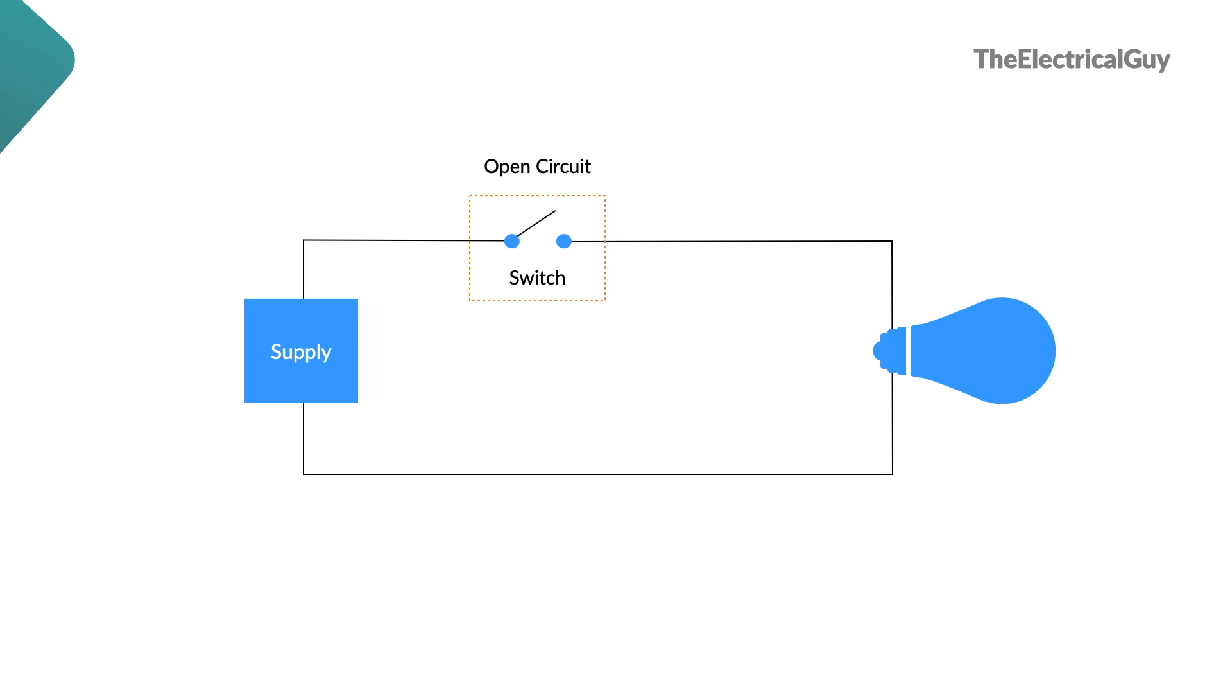Coming back to open circuit, no current can flow through an open circuit. So as per Ohm's law, an open circuit will have infinite resistance.